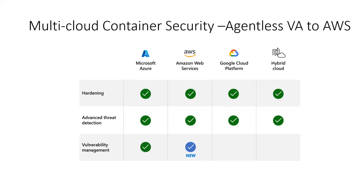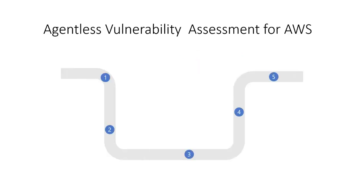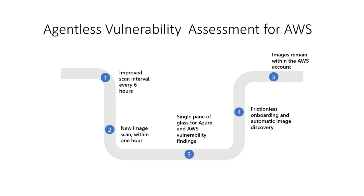The next cool feature is agentless vulnerability assessment scanning for your ECR images in AWS. This new capability helps reduce the attack surface of your Kubernetes estate in AWS by continuously scanning images to identify and manage container vulnerabilities. With this new release, ECR images are scanned every six hours and any new image uploaded will be scanned within one hour. The findings are available in Defender for Cloud as recommendations, and customers can use built-in automated workflows to take action. No images are transferred out of customer accounts as part of this scan process.